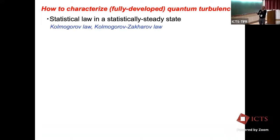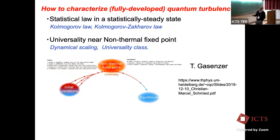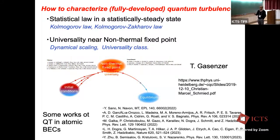How to characterize fully developed quantum turbulence? Statistical laws such as Kolmogorov flow must be very important from the viewpoint of far-from-equilibrium states. For example, universality near non-thermal fixed points may be very important — dynamical scaling or universality class. Starting from some initial conditions, the system passes through a non-thermal fixed point and should show universalities. This concept in quantum fluids has been developed recently, notably by Thomas Gasenzer's Heidelberg group. Several works have appeared about dynamical scaling and universality class for interacting atomic species.